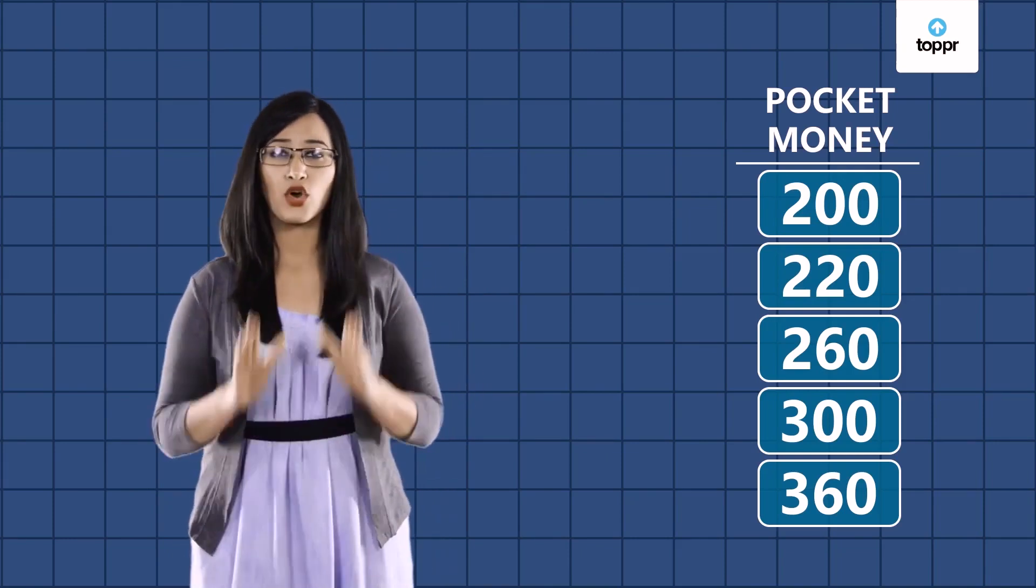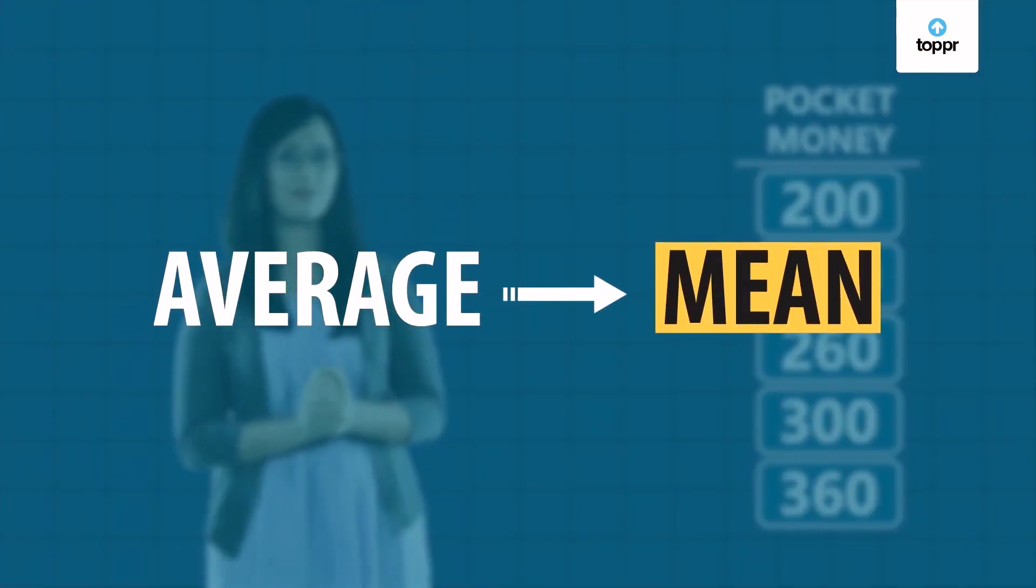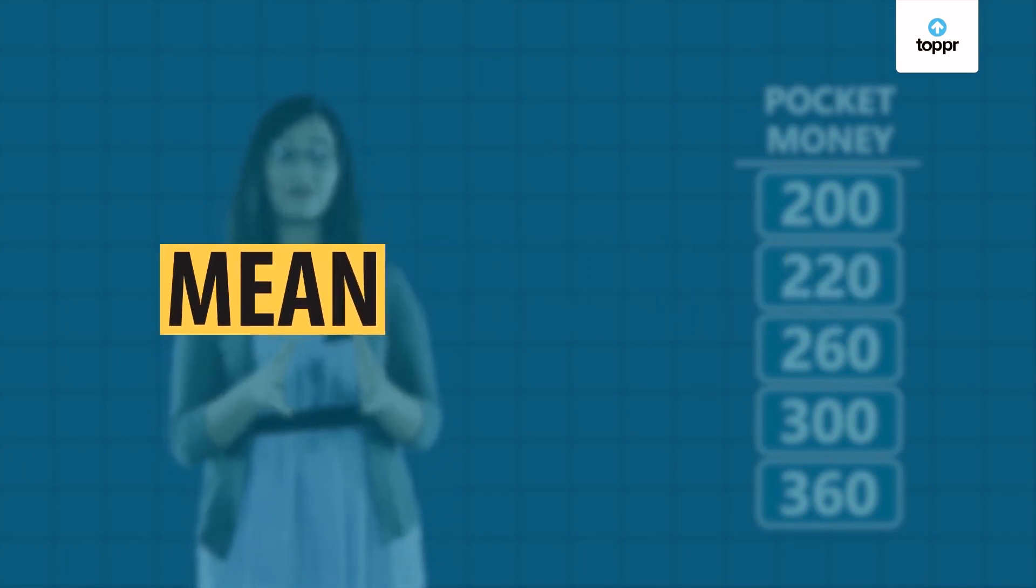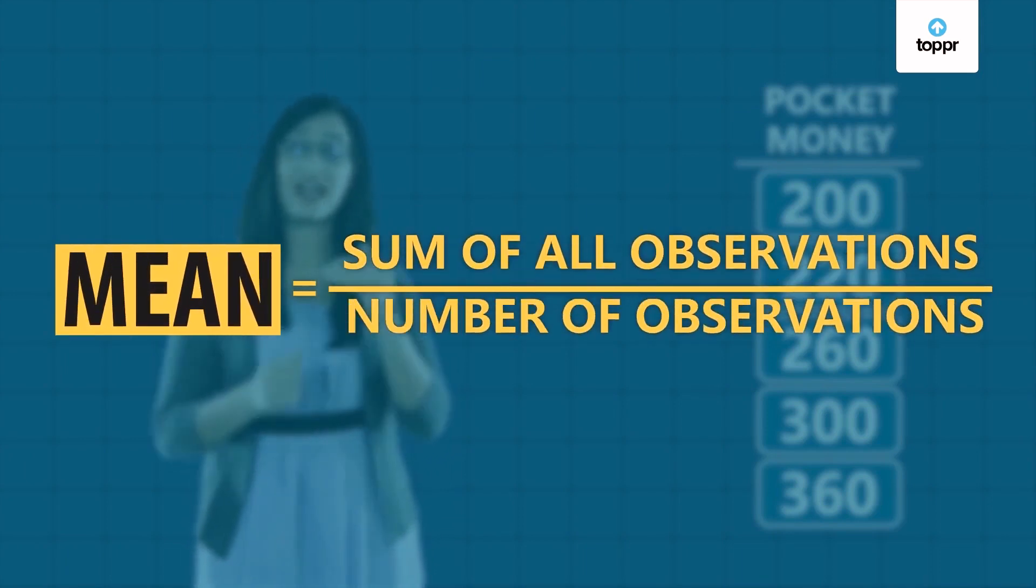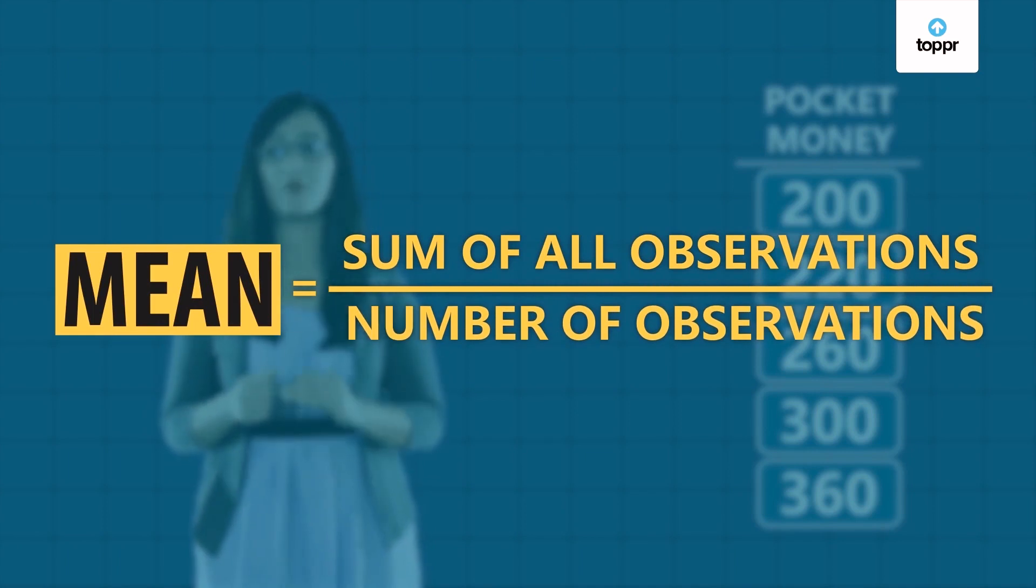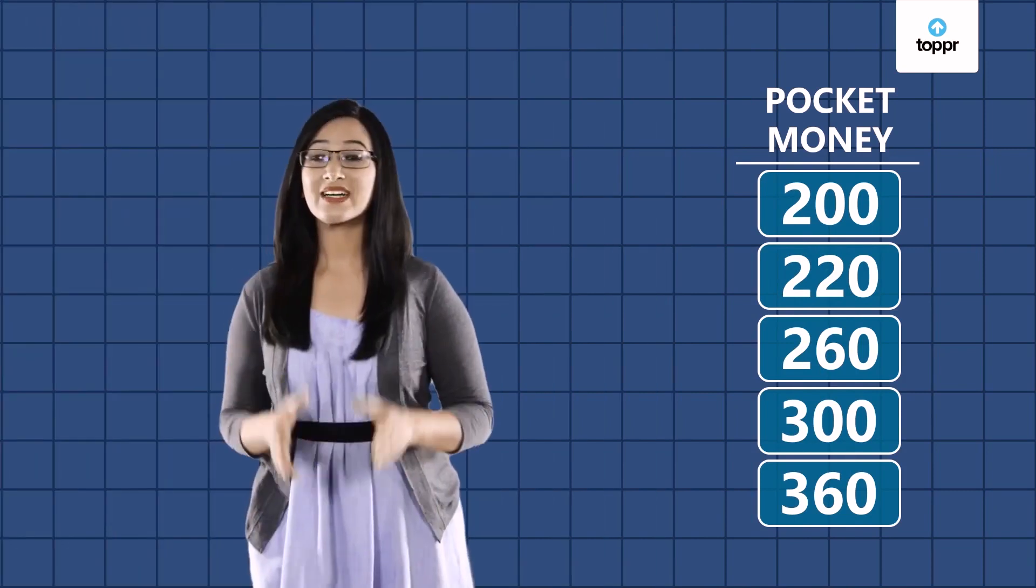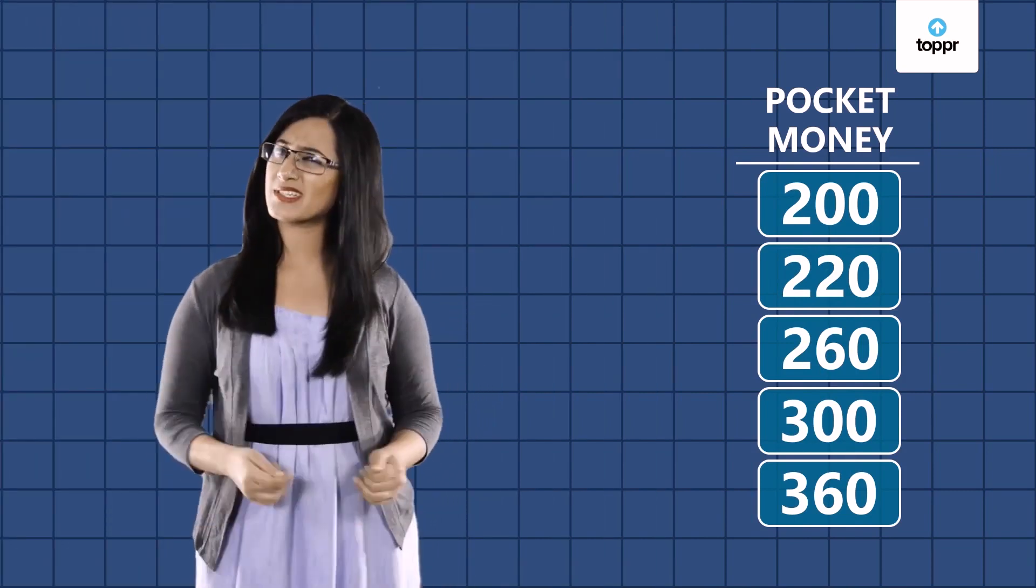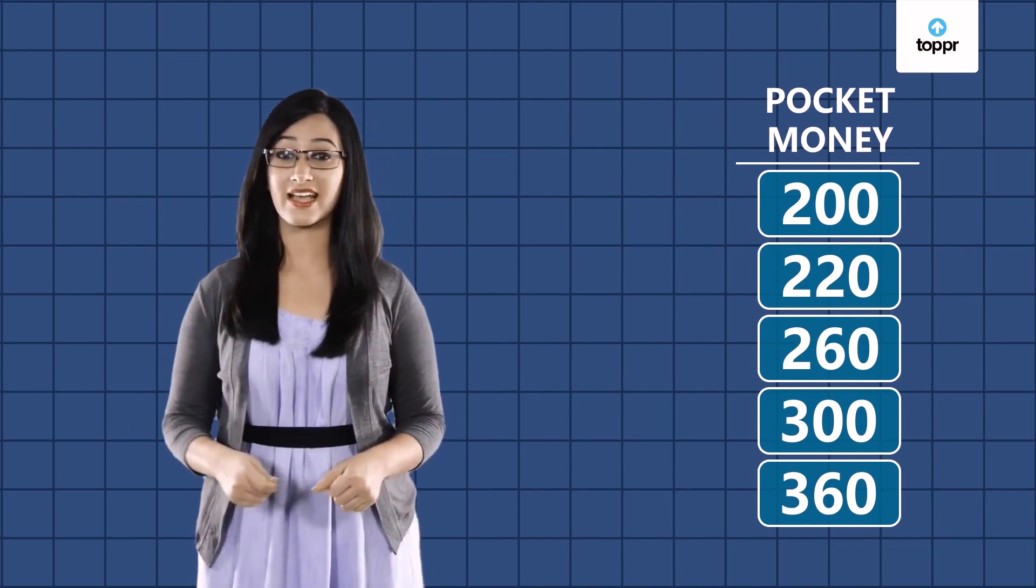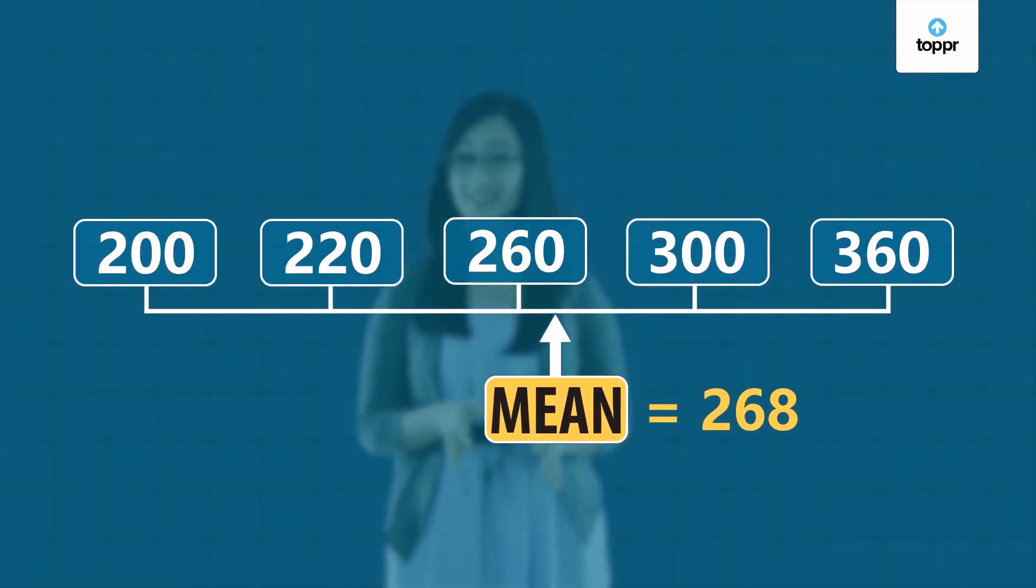To find the average, we use something called the mean. To calculate the mean value of pocket money, you'd have to add up all the values and divide by the total number of values. So the mean for this set of numbers is 268. This value is a good representative of all the values in the set because it lies more or less in the middle.